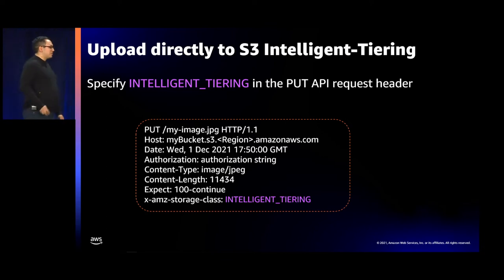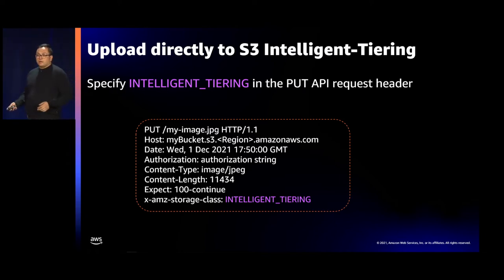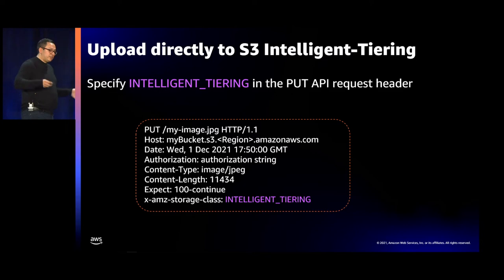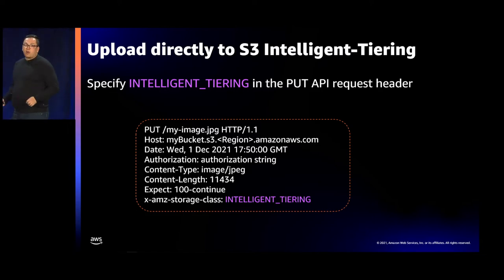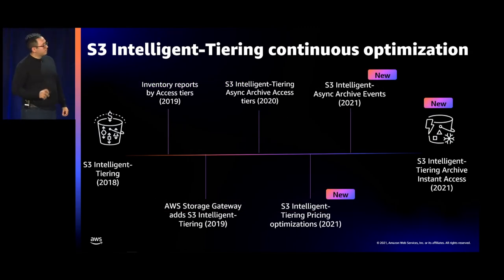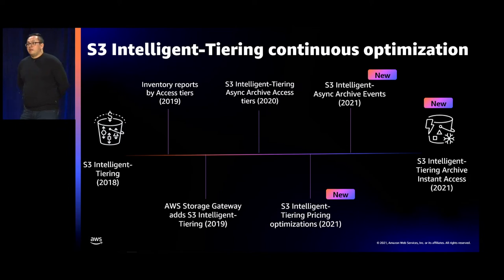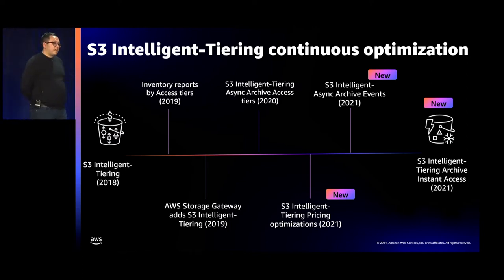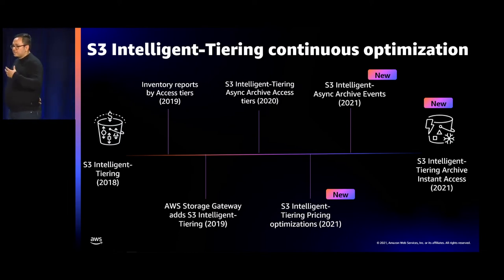With the increasing number of customers using Intelligent Tiering as their default storage class, I'm increasingly asked: what is the most cost-effective way to upload to Intelligent Tiering? You can directly upload your data to Intelligent Tiering by changing the PUT API request header and specifying Intelligent Tiering as a default storage class. This will ensure that any newly created objects are automatically uploaded to the Intelligent Tiering storage class. The simplicity of S3 Intelligent Tiering really resonates with customers. Since 2018, we have delivered various innovations within the Intelligent Tiering storage class that continue to deliver value without adding any operational overhead.